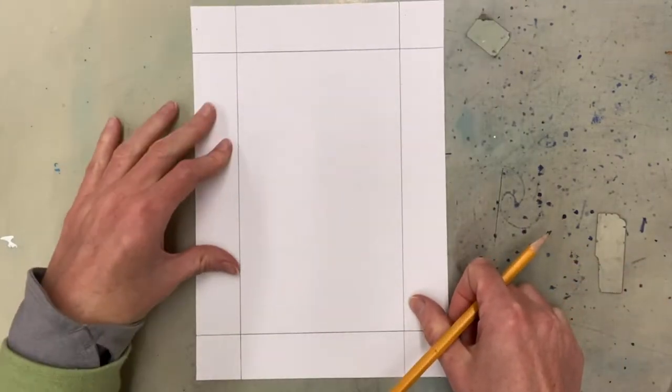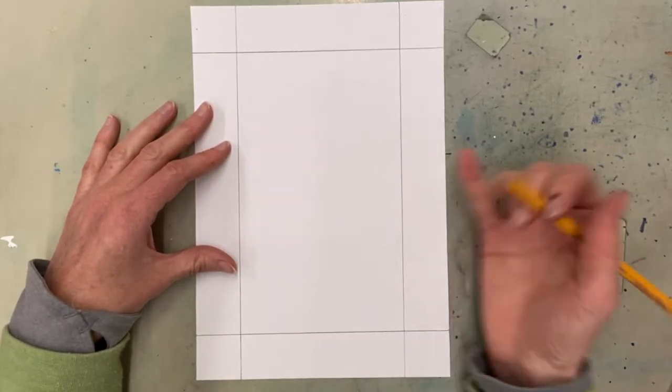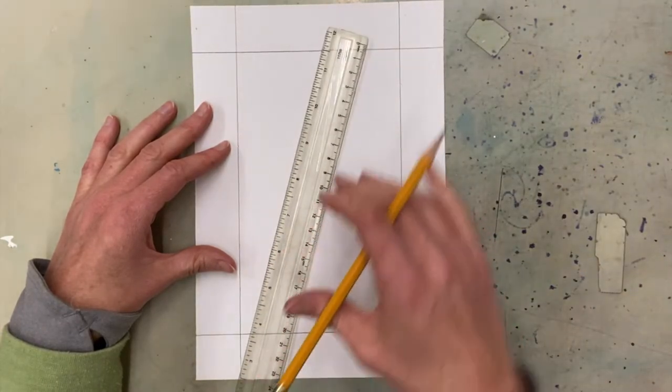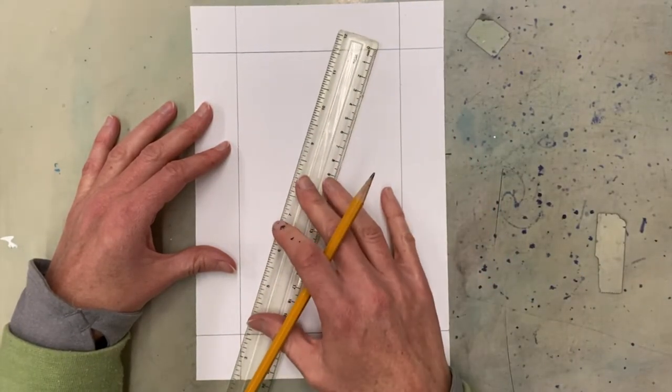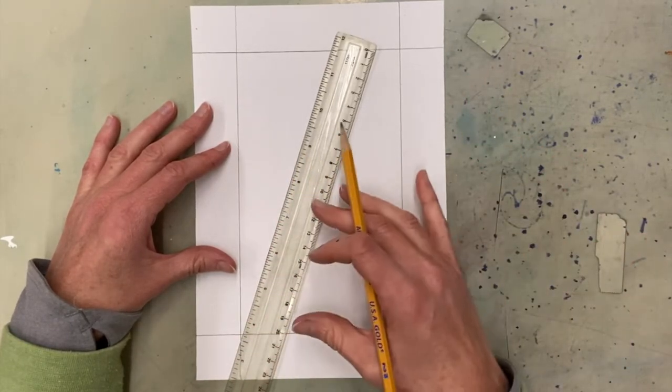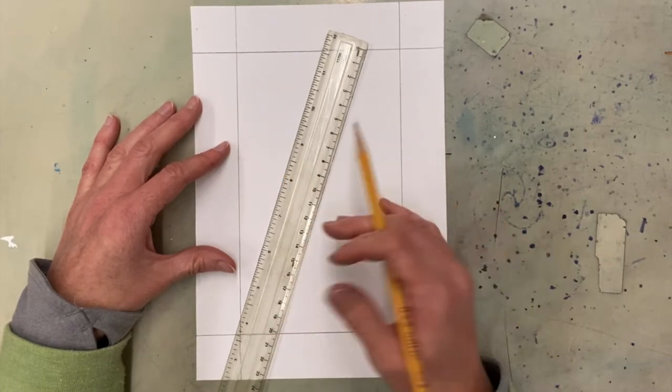So now boys and girls I'm going to draw my letter and it has to be a block or bubble letter. Some of us in fourth and fifth grade aren't great at that yet so I'm going to use my ruler to help me. Obviously if you have a curved letter like an S or an O you wouldn't be using the ruler, but if you have a letter with straight lines this is great.